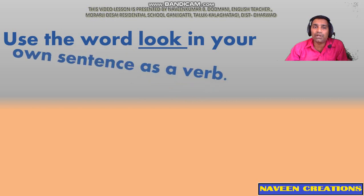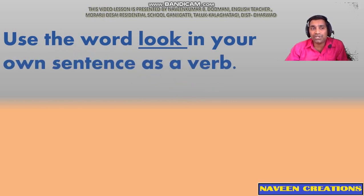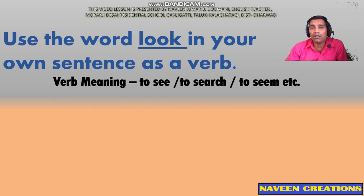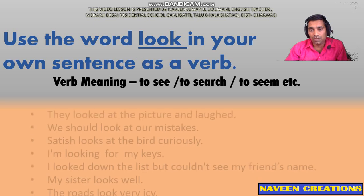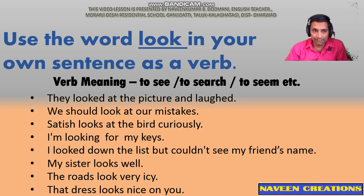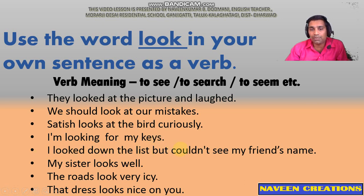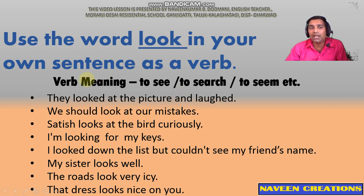If the same word is applied in the examination and the question asks you to frame a sentence using the word as a verb, you should know the verb meaning of look — that is, to see, to search. Examples: They looked at the picture and laughed. We should look at our mistakes. Satish looks at the bird curiously. I am looking for my keys. I looked down the list but couldn't see my friend's name. My sister looks well. The roads look very icy. That dress looks nice on you. In this way, we can use the word look in its verb meaning very easily.